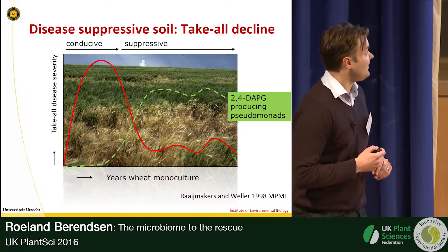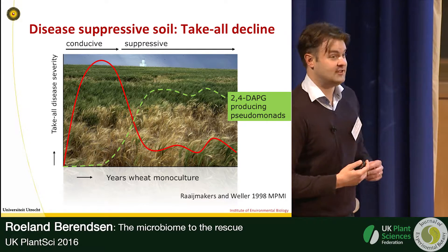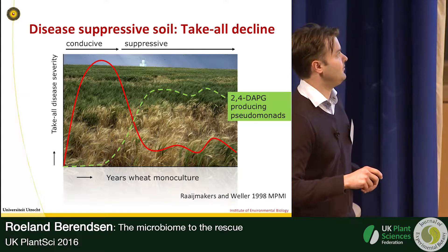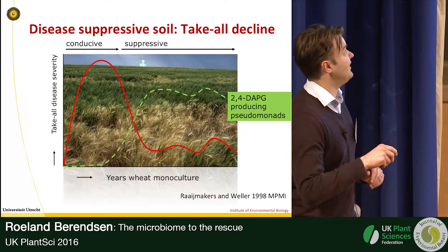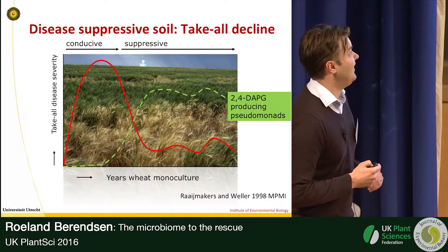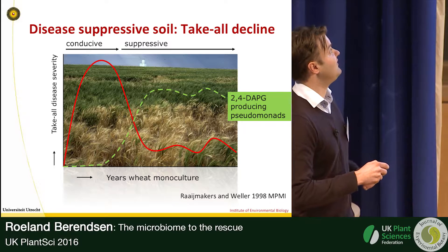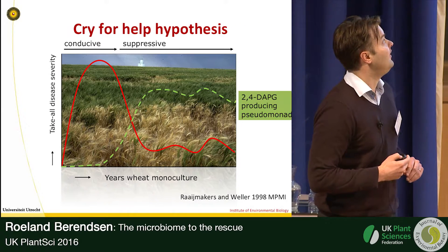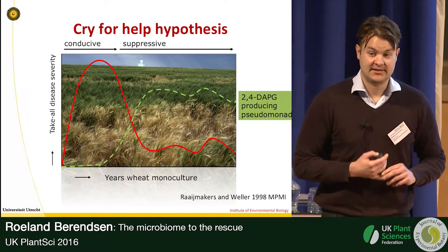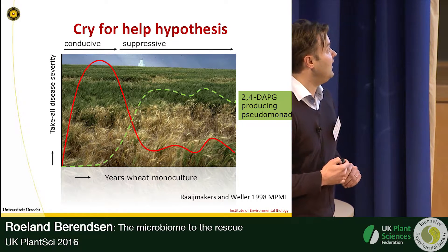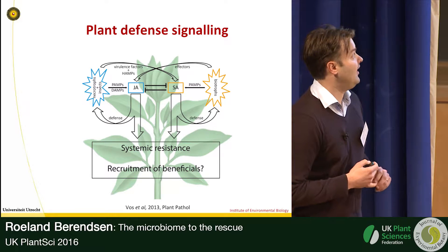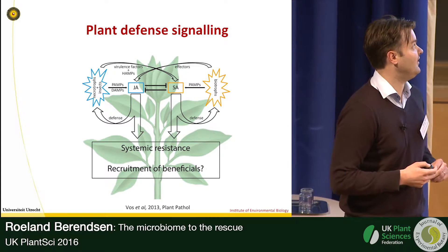This disappearance was found to be correlated with an increase in the abundance of specific Pseudomonas bacteria that produce the antibiotic 2,4-diacetylphloroglucinol (DAPG), which inhibits the fungus causing this disease. We're really interested in understanding what causes this increase in these bacteria. It was already hypothesized in the 1970s that at this point the plant 'cries out for help' and starts recruiting these beneficial bacteria.